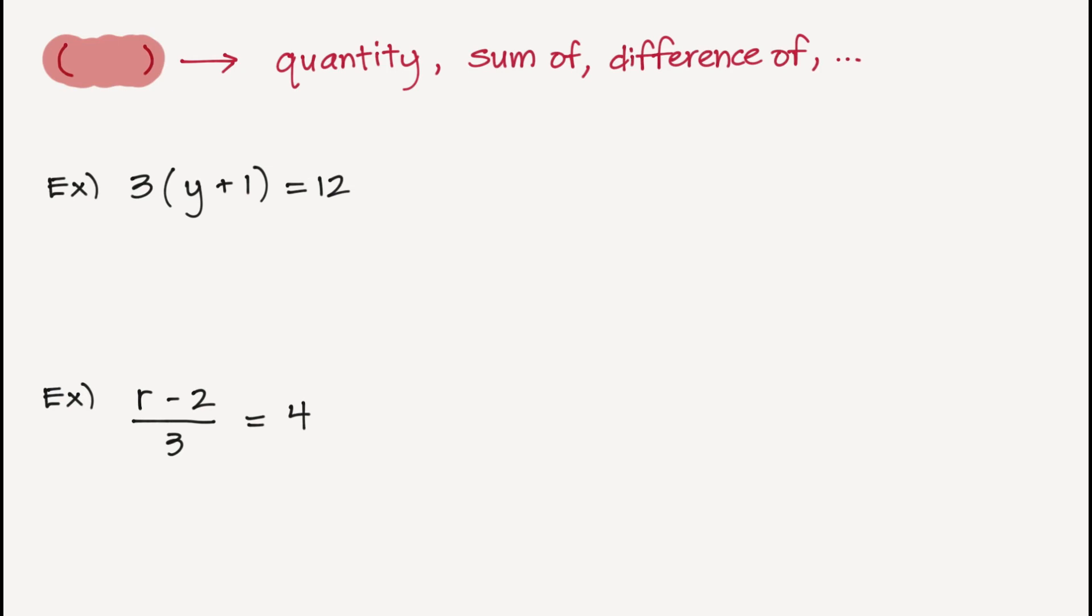So for our first one, I can see that I have a 3 on the outside of the parentheses. And that means that it is 3 times whatever is inside. And what I see inside is the sum of two things, Y and 1. So I'm going to say 3 times the sum of, which will help me know that I need to group those together, Y and 1. And then I can say is or is equal to or is equivalent to. Any of those would work. The number 12. So 3 times the sum of Y and 1 is equal to 12.